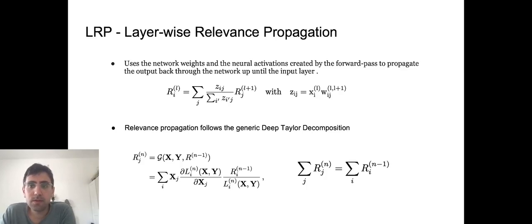Here we can see key formulas to understand this method. The first formula is the LRP equation, which shows the flow of relevancies between the layers of the network. The second formula is the deep Taylor decomposition, where L_n is the layer's operations on two tensors X and Y. Typically, the two tensors are just the input and the weights, and it satisfies the conservation law on the right side.